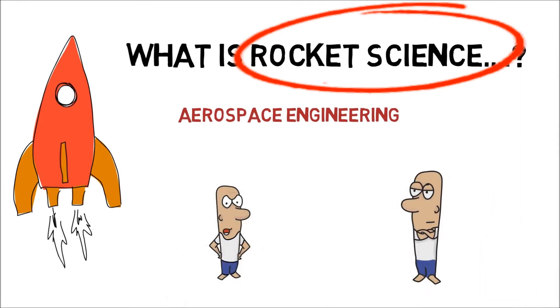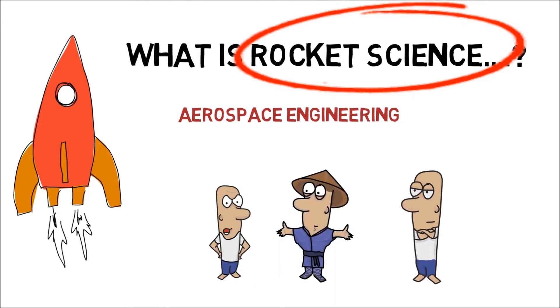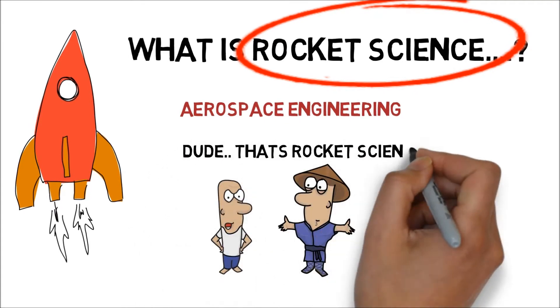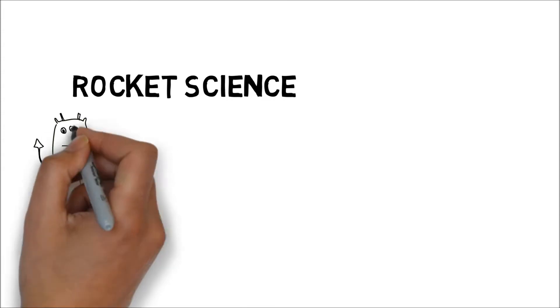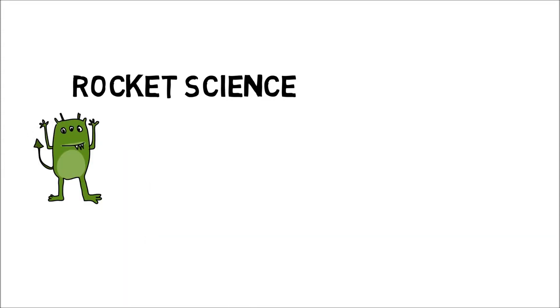They used the word rocket science for almost all the unknown things which they find difficult to explain. The term rocket science has always been referred to as alien. So let's decode rocket science in five brief points.